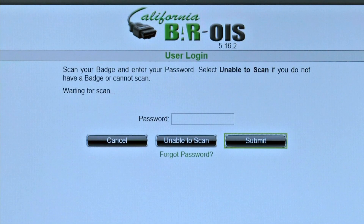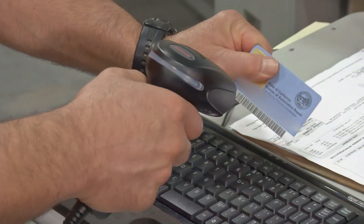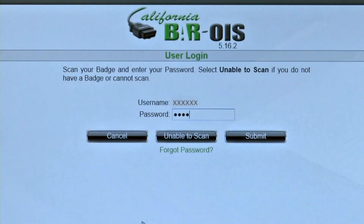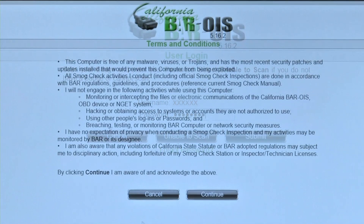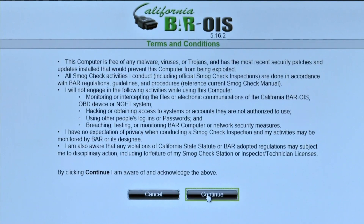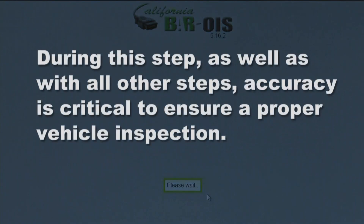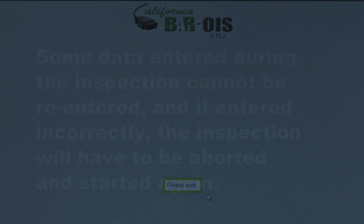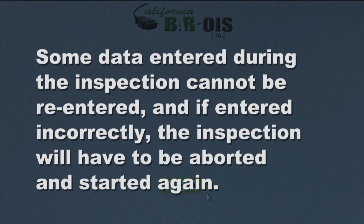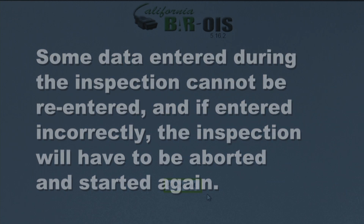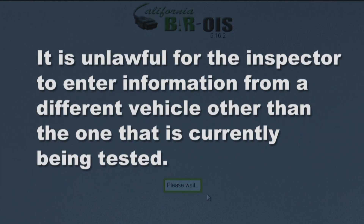At the user login screen, the inspector scans their inspector badge and then enters their password. After reading the terms and conditions, click Continue. Accuracy is critical to ensure a proper vehicle inspection. Some data entered during the inspection cannot be re-entered, and if entered incorrectly, the inspection will have to be aborted and started again. It is unlawful for the inspector to enter information from a different vehicle other than the one currently being tested.